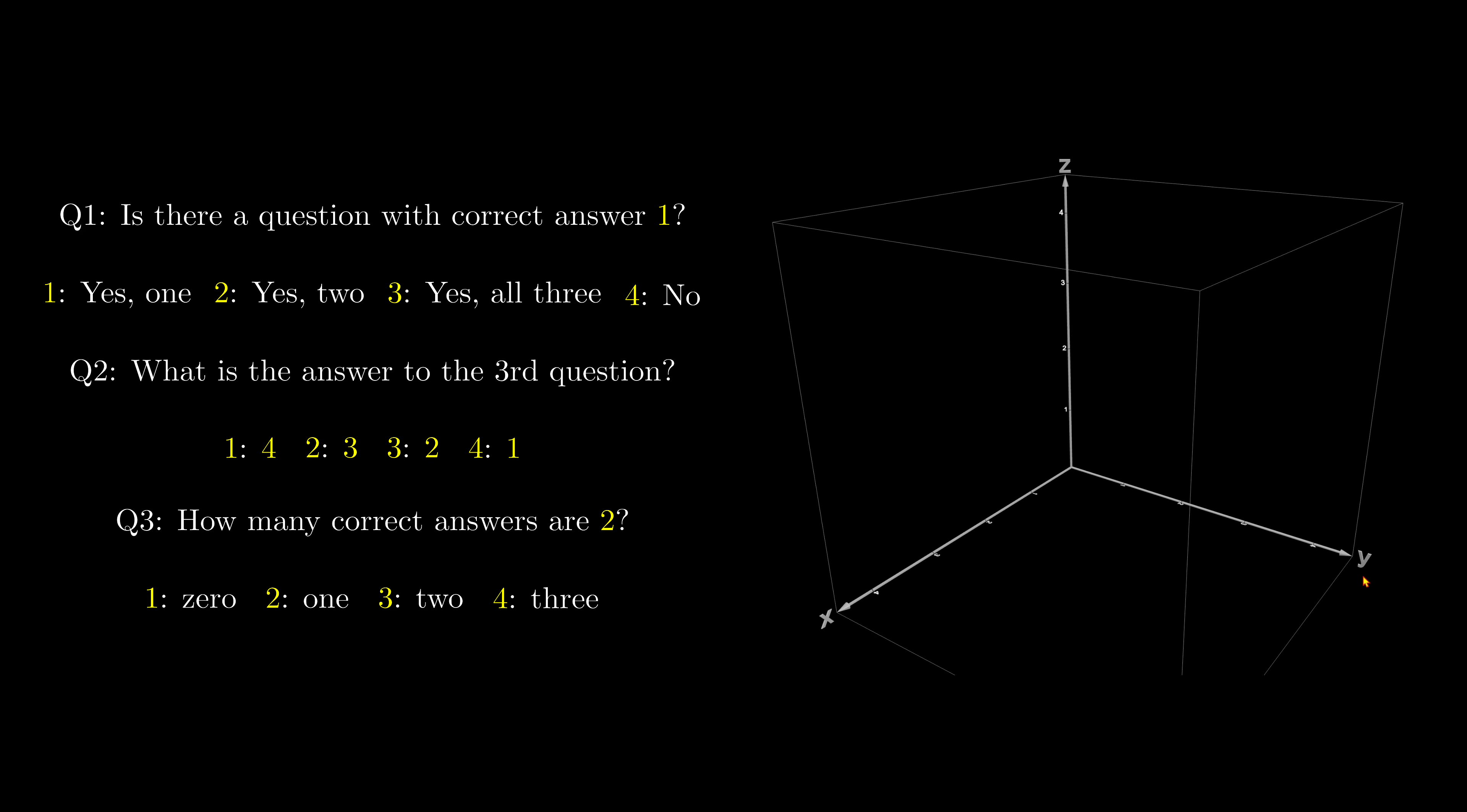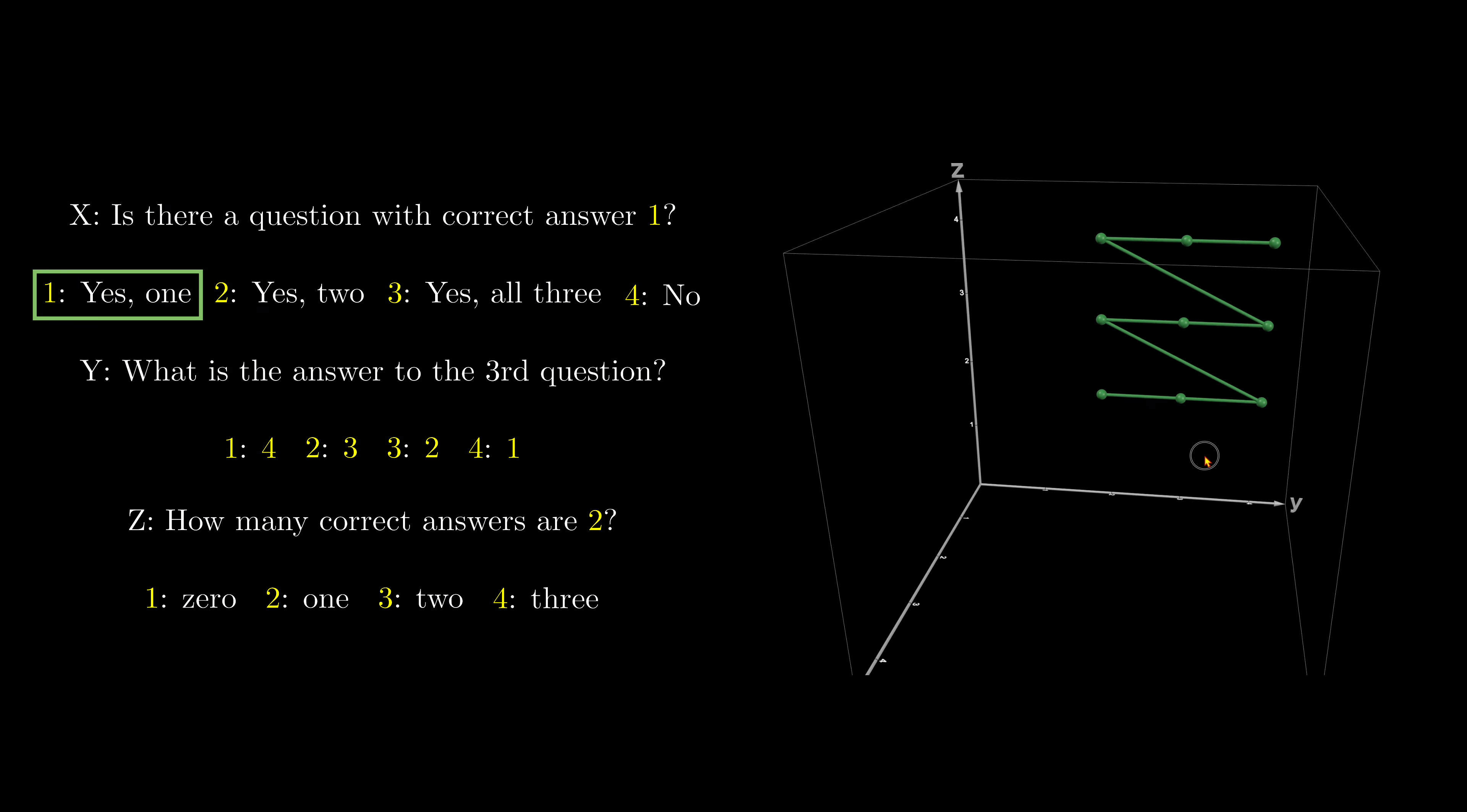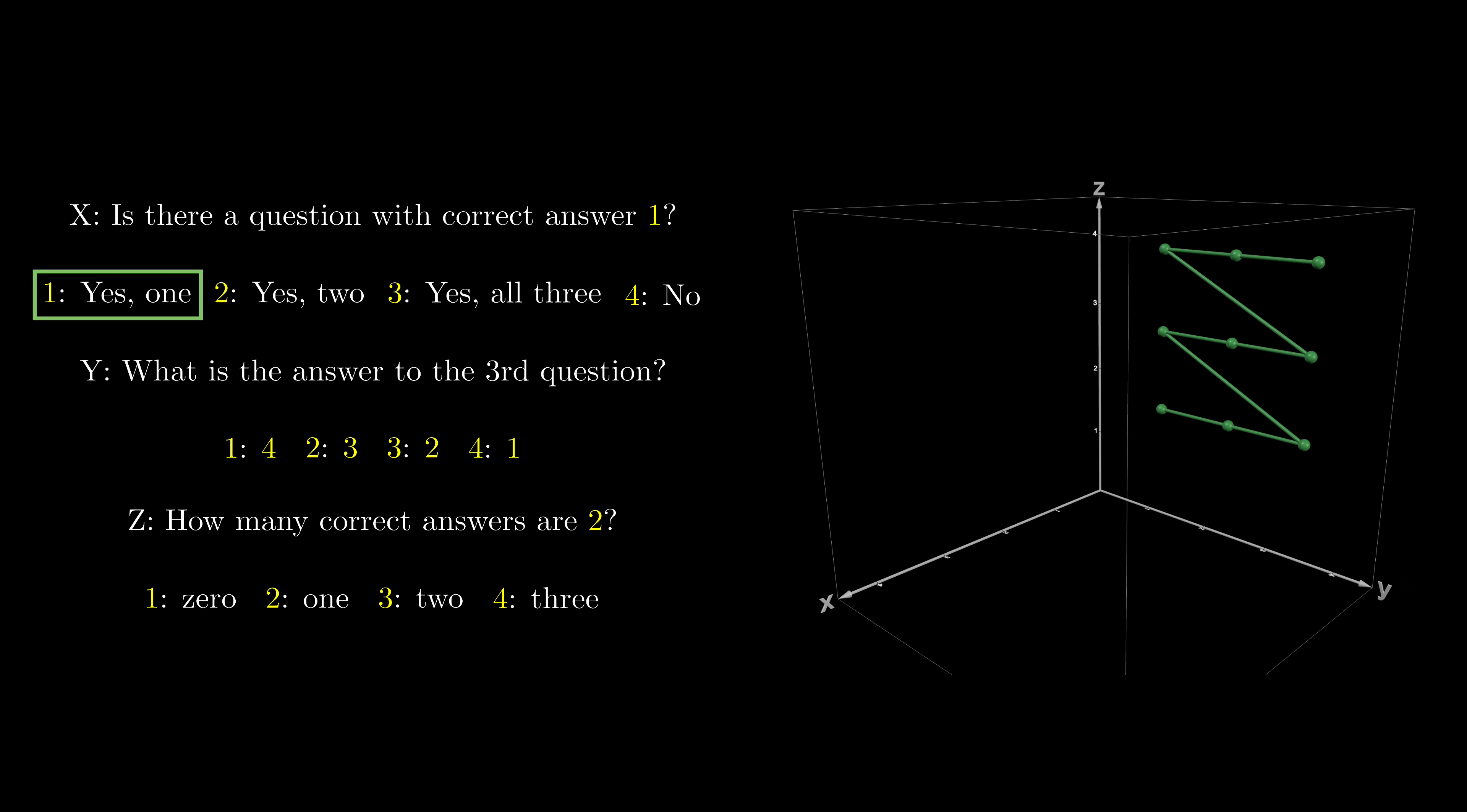Next, I can treat question one, two, three as x, y, z. Therefore, one combination of the options will become one point in this 3D space. The nine green points represent the feasible combinations that is restricted by option one of question one, because option one says there is only one question with correct answer one, so question two and three can only take values two, three, and four, therefore totally nine combinations.